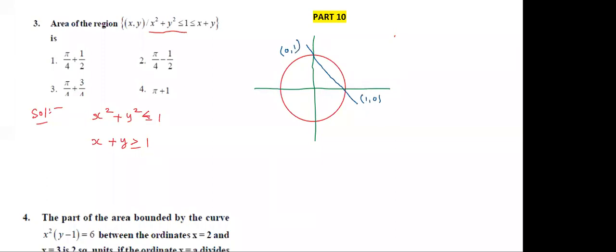Observe which is the required area. x² + y² ≤ 1 means this part — less than means this part, which is downwards. And x + y ≥ 1 — greater than means upwards.